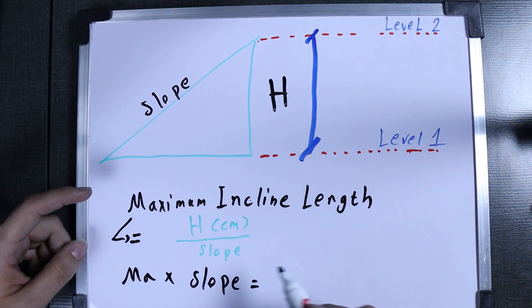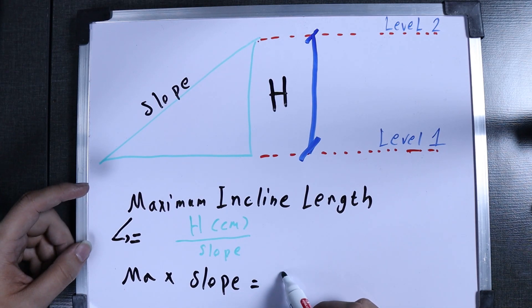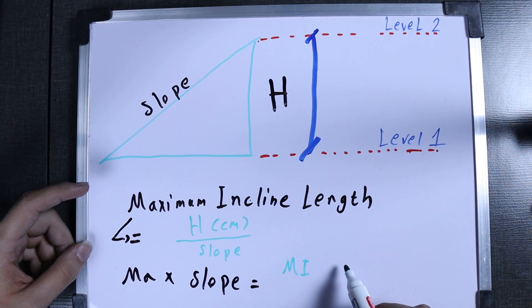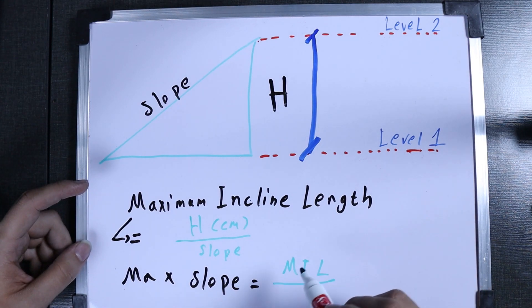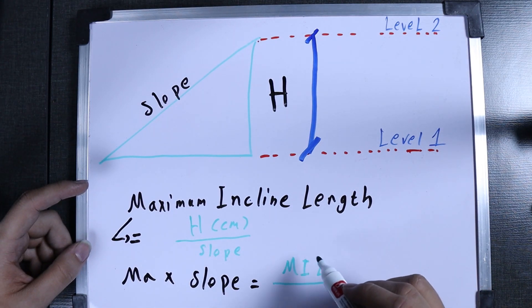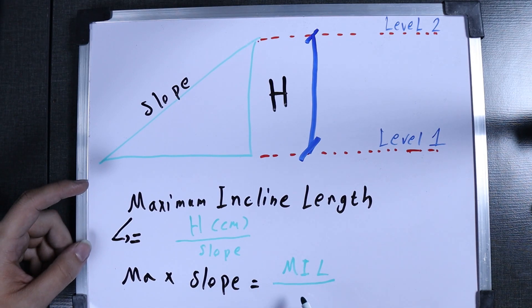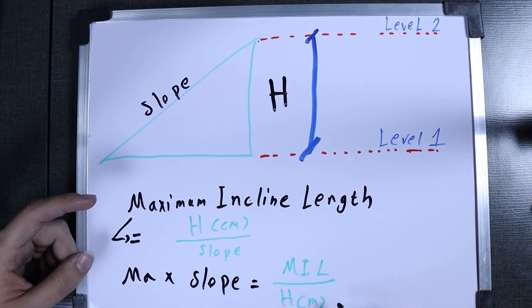Get this result and put it in the Maximum Incline Length field — I'll write it as 'mil' as an abbreviation — and then divide this by the height in meters. That gives you the Max Slope value.